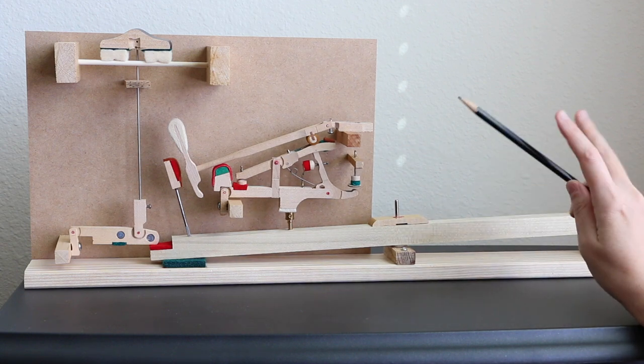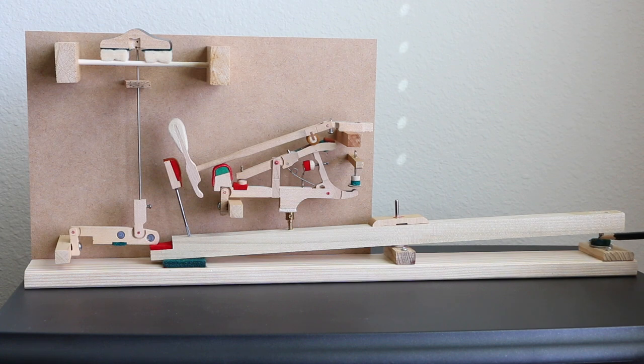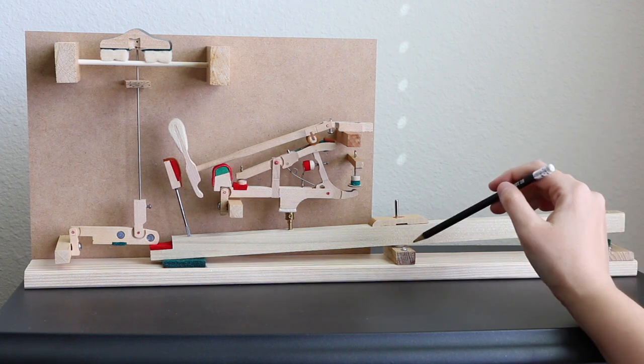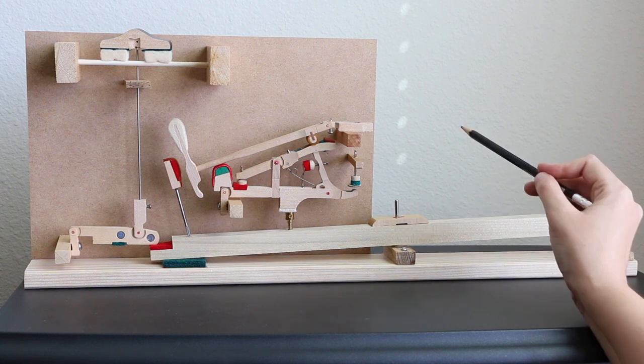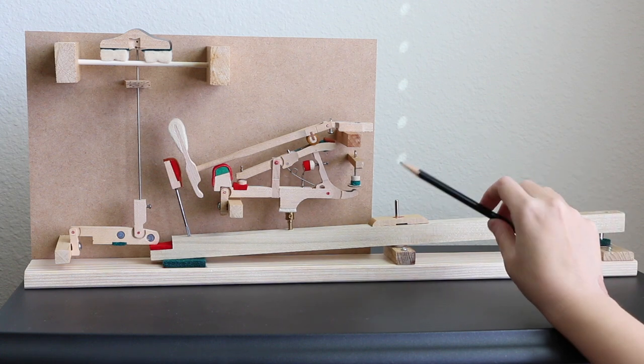So the key is connected to the key frame or the key bed with two points. This is the key front and the front rail pin down here, and this is the balance rail, the balance rail pin. The whole balance rail acts as a seesaw for the key.